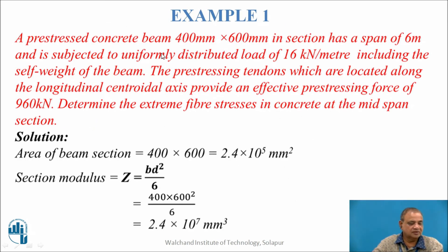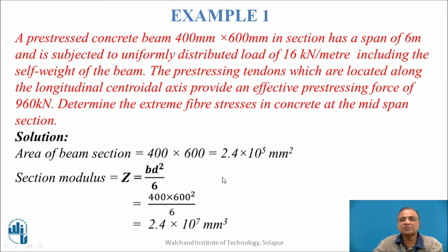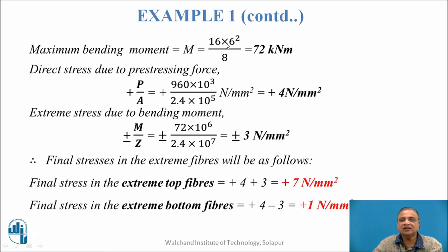Example: A pre-stressed concrete beam of 400 mm × 600 mm cross-section has a span of 6 m and is subjected to a uniformly distributed load of 16 kN/m including self-weight. The tendons located along the centroidal axis provide an effective pre-stressing force of 960 kN. Determine the extreme fiber stresses at the mid-span section. Solution: Area A = 400 × 600 = 2.4 × 10⁵ mm². Section modulus Z = BD²/6 = 2.4 × 10⁷ mm³. Maximum bending moment = WL²/8 = 72 kN·m. Direct stress due to pre-stressing force FA = P/A = 4 N/mm².